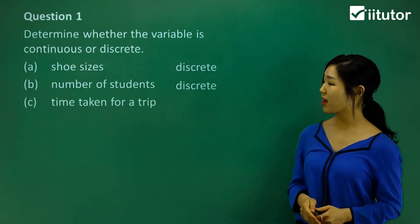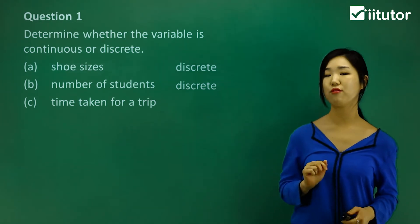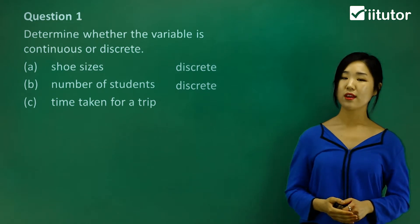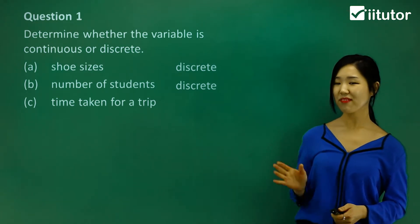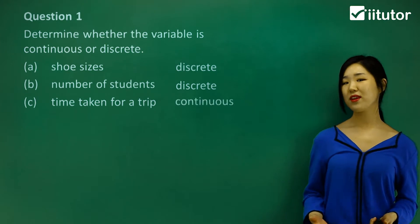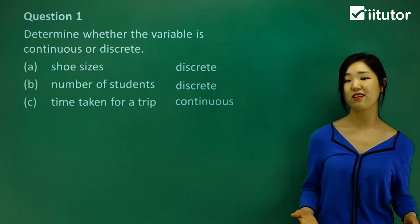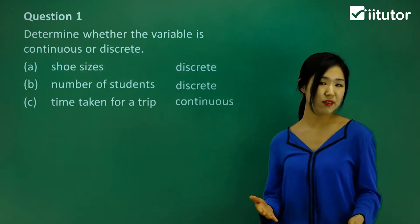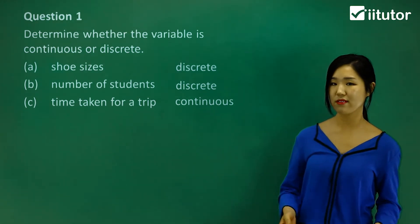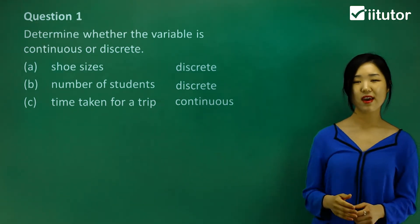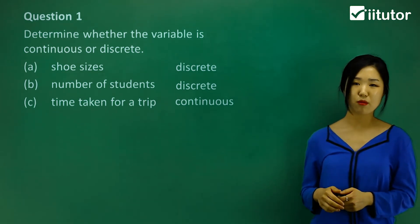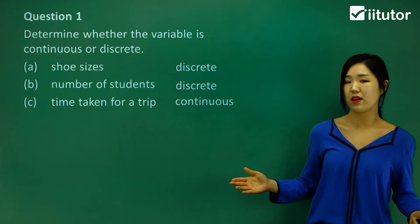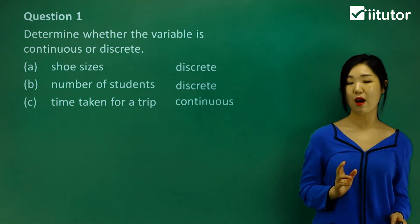The next one is the time taken for a trip — the duration of a trip. This one is continuous. The reason is because time can be six hours, six and a half hours, 6.75 hours, or 6.7501 hours. It could be any number on the number line, so this one is a continuous random variable.